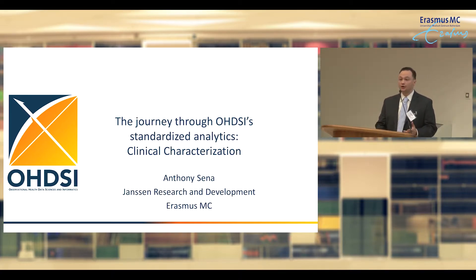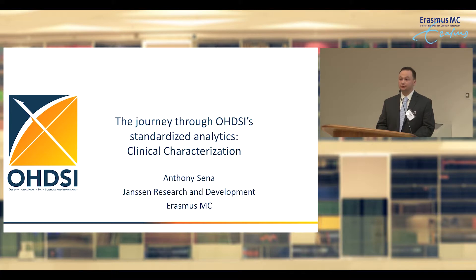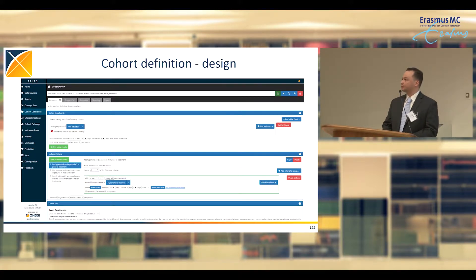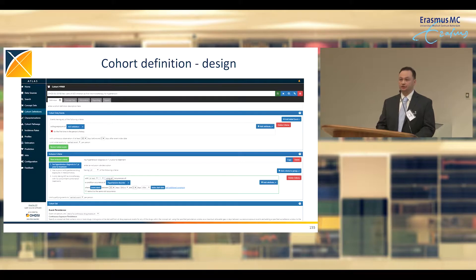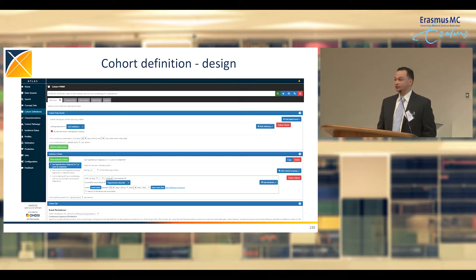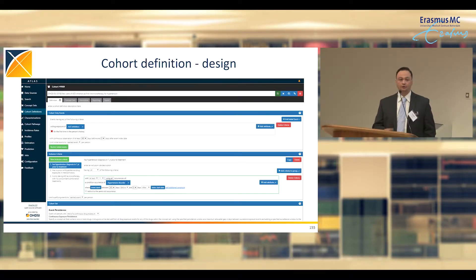Thanks, Martin. I'm going to talk today about using Atlas for clinical characterization and some of the standardized analytics we've built into the tools. To start, we need to think about who it is we want to characterize, which begins by defining cohorts within Atlas. Since we're focused on hypertension, I'll start by defining a cohort of new users of ACE inhibitors — finding the first drug exposure to an ACE inhibitor in the patient's history, requiring a 365-day look-back.